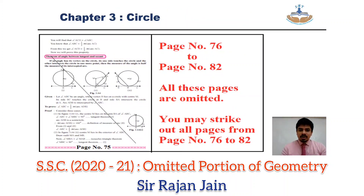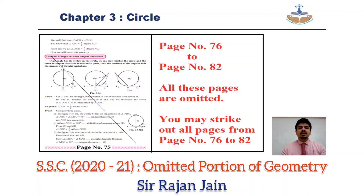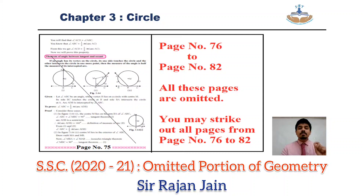In chapter number 3 — circle — directly come to page number 75. On page number 75, you will see the theorem of angle between tangent and secant — that entire theorem is omitted. From page number 76 to page number 82, all these pages are omitted. You may strike out all pages from 76 up to and including page number 82.